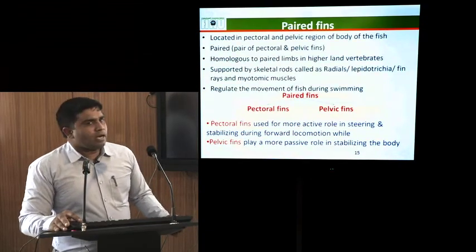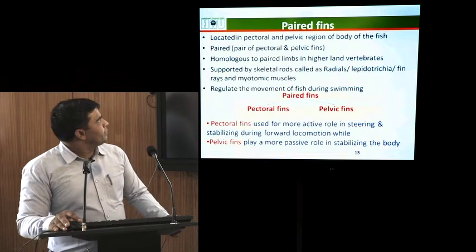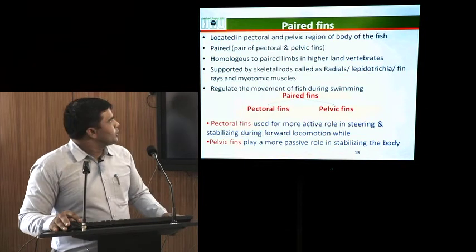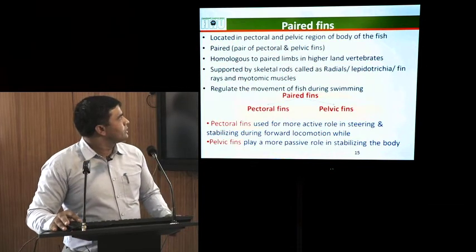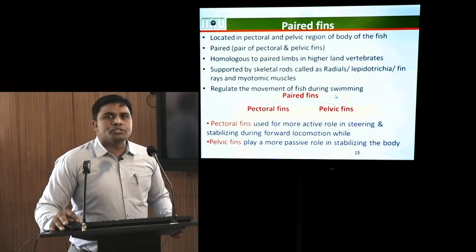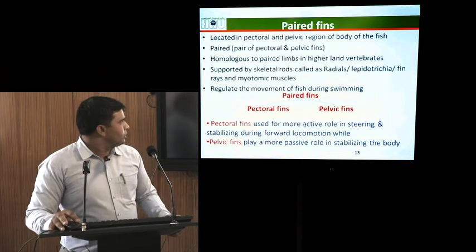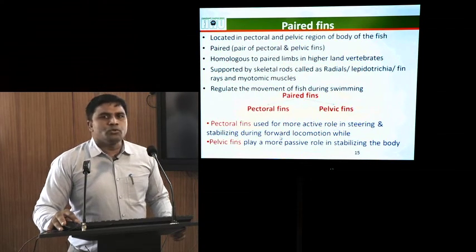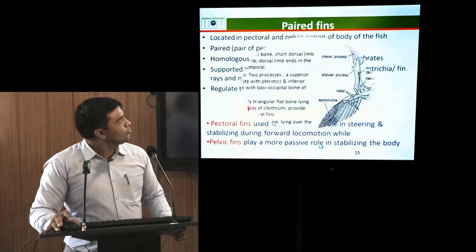Paired fins are located on the pectoral and pelvic girdles of the fishes. These paired fins are homologous to the limbs present in higher land vertebrates. These paired fins are supported by skeletal rods called radials, lepidotrichia or fin rays, and also by myotomic muscles. These regulate the movement of the fish during the swimming process. Paired fins are further of two types: pectoral fins and pelvic fins. Pectoral fins are more active, having a role in steering and stabilizing during locomotion, while pelvic fins play a passive role in stabilizing the body of the fish.